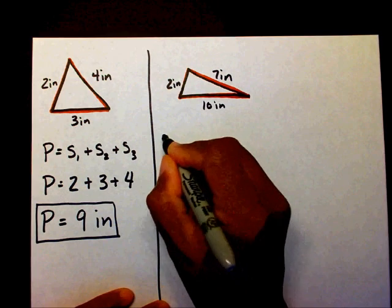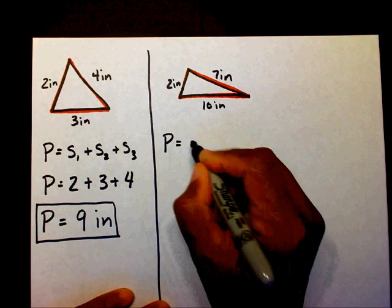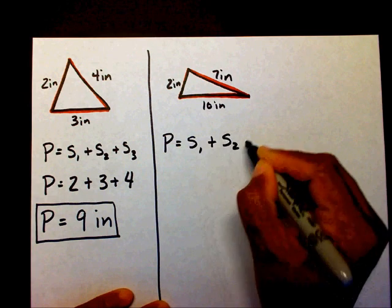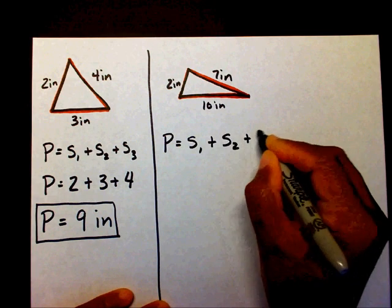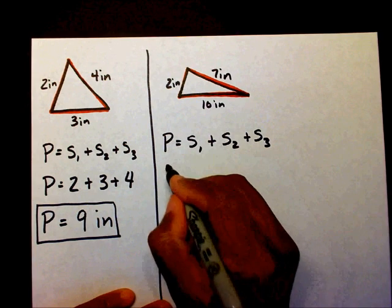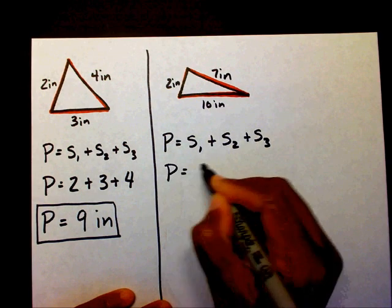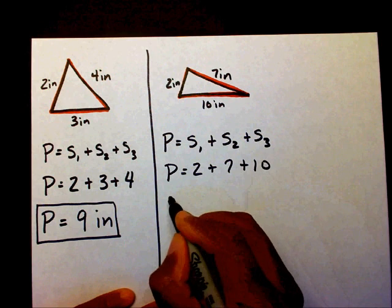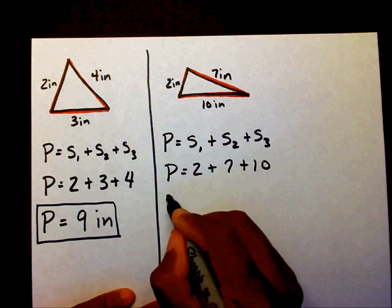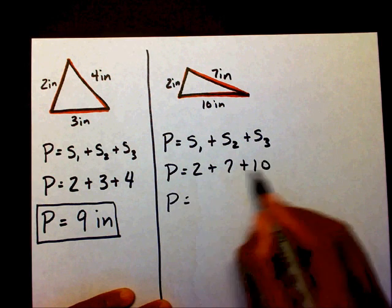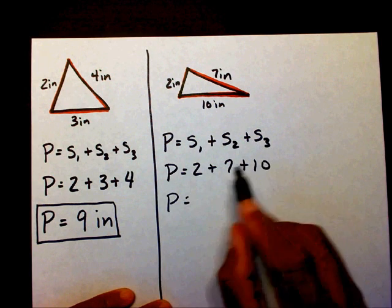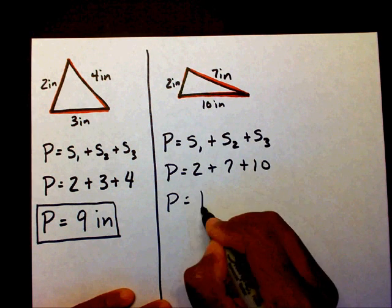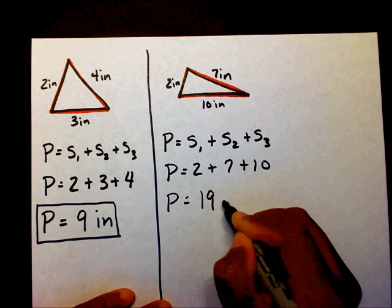So I'm going to write my formula: p equals side one plus side two plus side three. So p equals two plus seven plus ten. Now I just need to add my sides. Two plus seven is nine, plus ten is nineteen inches.